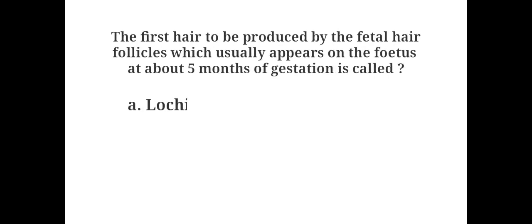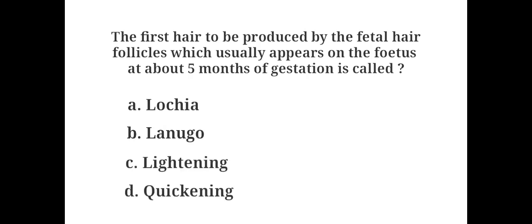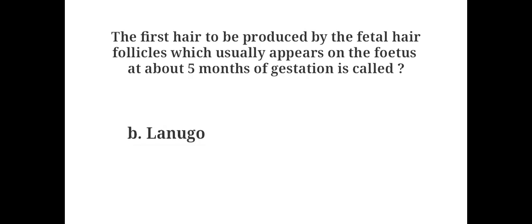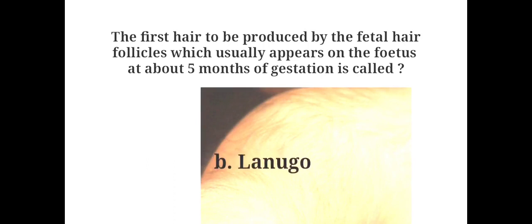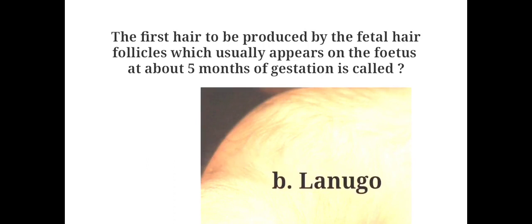The first hair to be produced by the fetal hair follicles, which usually appears on the fetus at about 5 months of gestation, is called: A. Lochia, B. Lanugo, C. Lightening, D. Quickening. The answer is B. Lanugo. Lanugo is the first hair to be produced by the fetal hair follicles, which usually appears on the fetus at about 5 months of gestation.